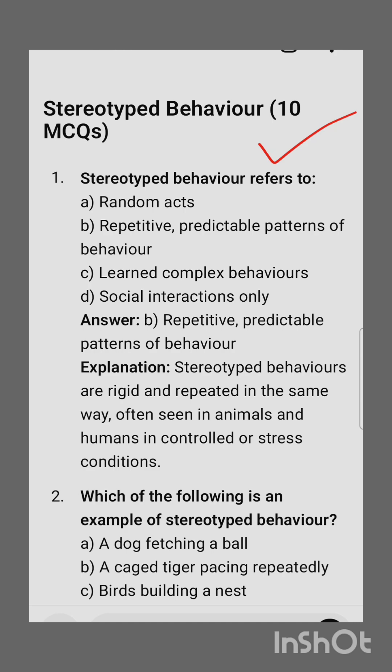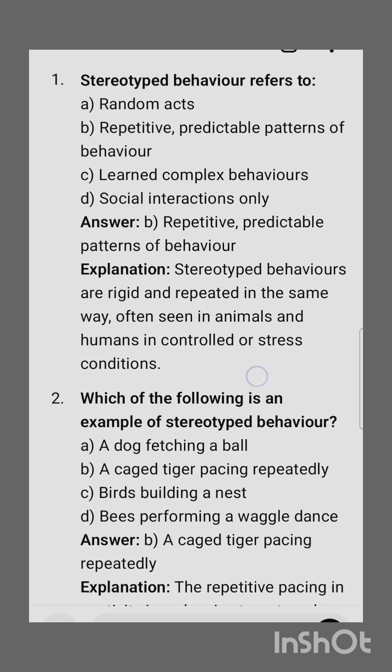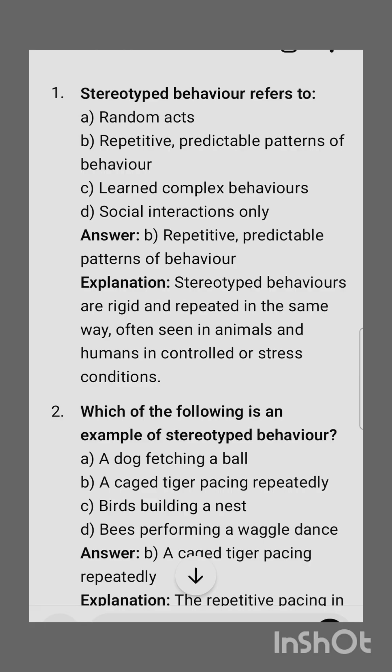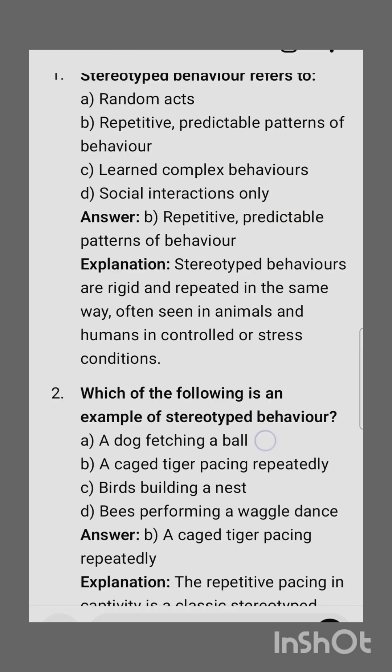We will discuss 10 MCQs from this subtopic. The first MCQ: stereotyped behavior refers to — the correct option is repetitive predictable pattern of behavior. Stereotyped behaviors are rigid and repeated in the same way, often seen in animals and humans in controlled or stressful conditions.